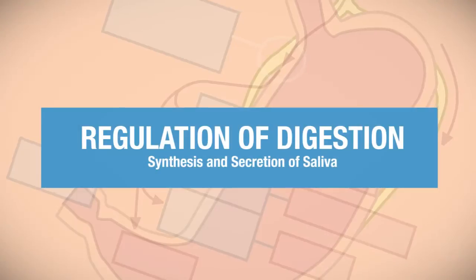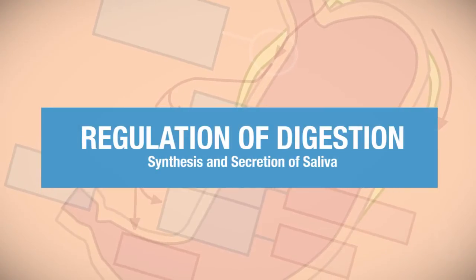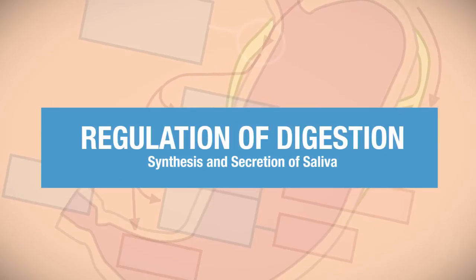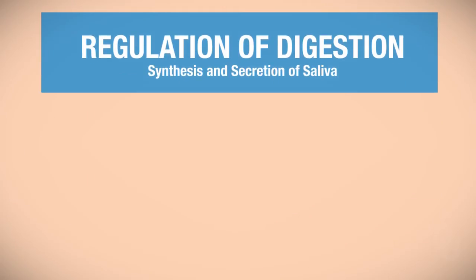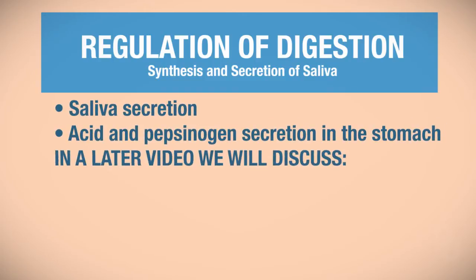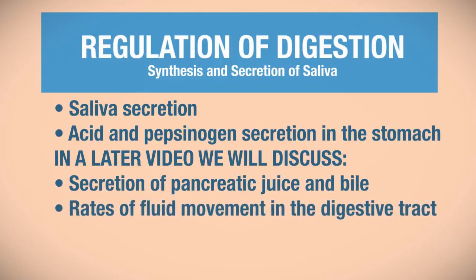We're going to be looking at gastrointestinal secretion and its regulation. Specifically, we're going to be focusing on saliva secretion, followed by acid and pepsinogen secretion in the stomach. The following video will discuss secretion of pancreatic juice and bile, and then rates of fluid movement.